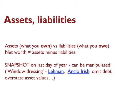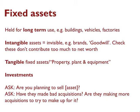This is a snapshot — when a company compiles its accounts, it's a snapshot taken on the last day of the year, so it can be manipulated by moving money around between companies. Lehman and the Anglo-Irish Bank are both examples of companies that manipulated this in their accounts and collapsed later, by leaving out debt and overstating the value of assets.